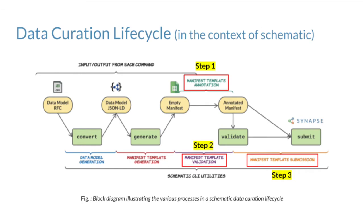So to ensure that the data are annotated in a standardized way, in step one Schematic provides researchers with a spreadsheet interface with pre-filled columns for a specific data type for annotation. For example, a spreadsheet for patient biospecimen metadata. In the context of Schematic, a data type is any relatively high-level biomedical component such as an assay data and patient demographics data component.